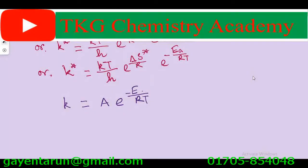The rate constant: small k equal to kT by h, into e to the power del S star by R, into e to the power minus E by RT.